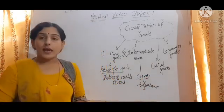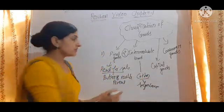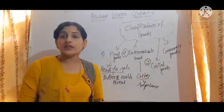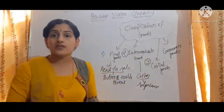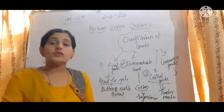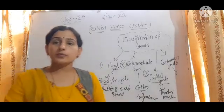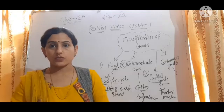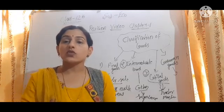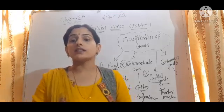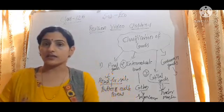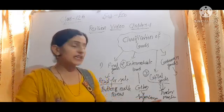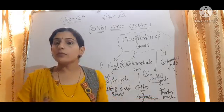Then we talk about capital goods. Capital goods are those goods which are purchased by the producer for further production. Like tractors and machines — all these are used by the farmer in the agriculture sector for production. So capital goods are mainly used by the producer.